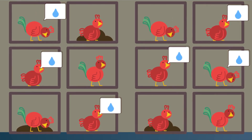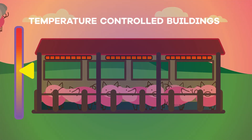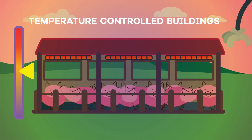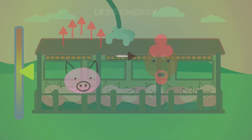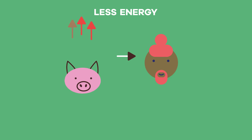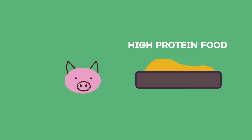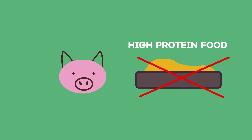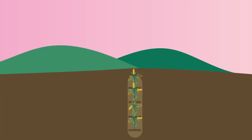Pigs are kept in temperature-controlled buildings so they lose less heat to the environment and use less energy maintaining a constant body temperature, meaning more energy is available for humans in their food. They are also fed high-protein food to increase growth, which is not the natural diet of a pig.